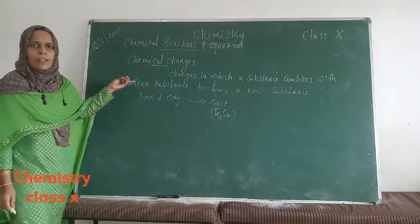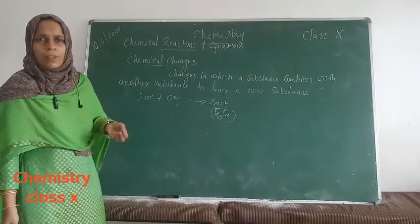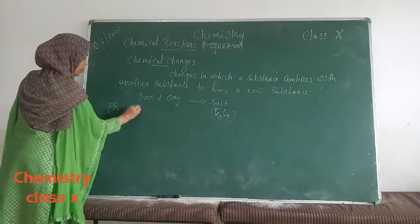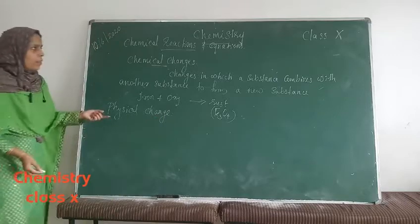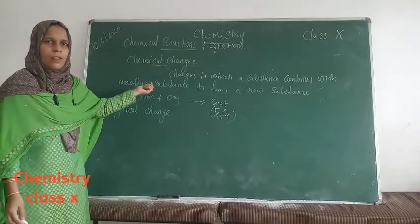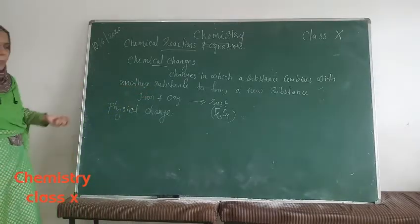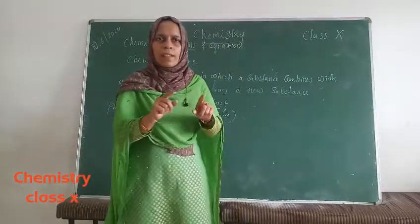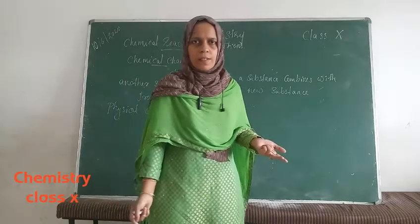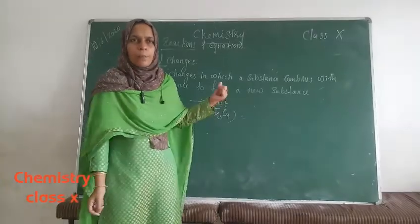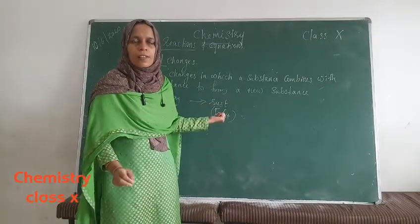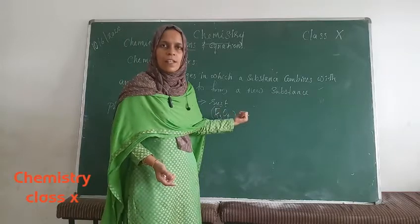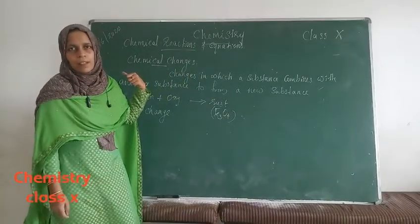And whenever we talk about chemical changes, we also have to go through physical changes. In one sentence, what is a physical change? Let us consider cutting of paper. If we cut a piece of paper, we are changing only the size and shape of the paper — the paper is not changing into any other substance. So physical changes are temporary changes where only the size and shape of the substance is changing. Whereas a chemical change is a permanent change.